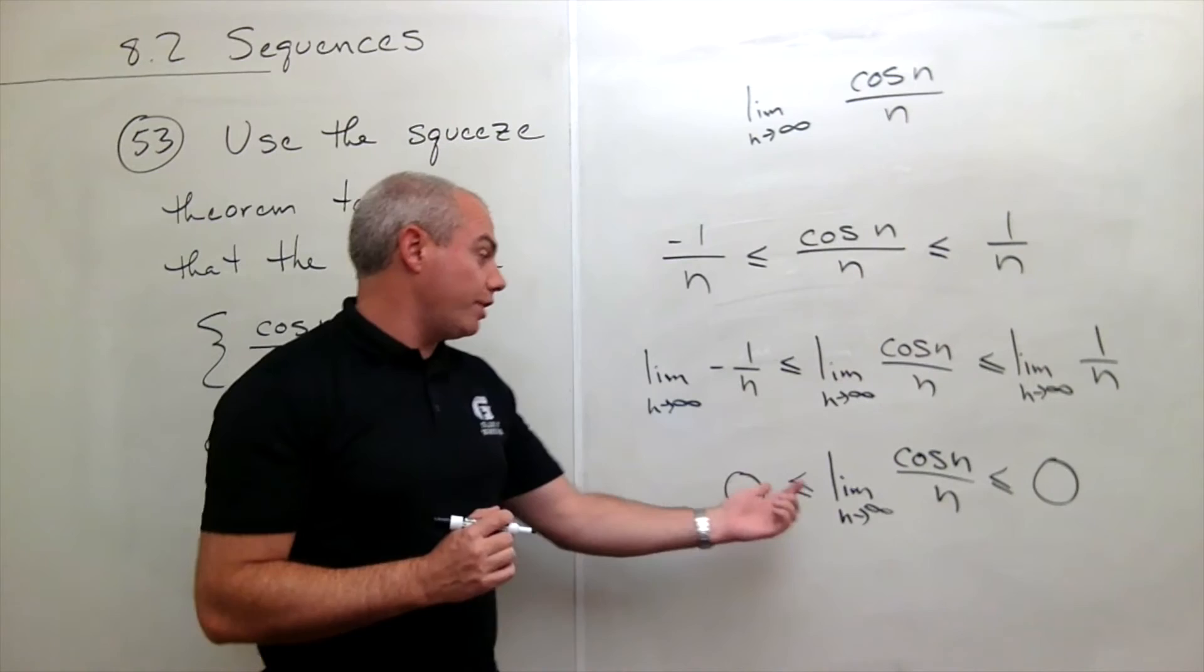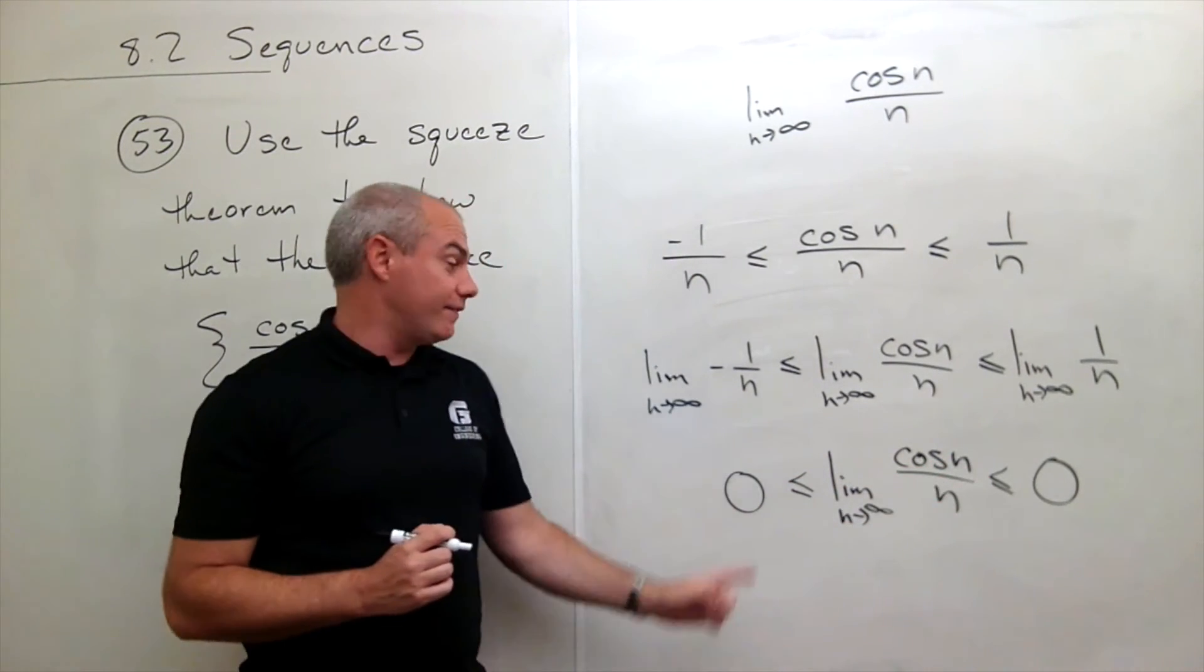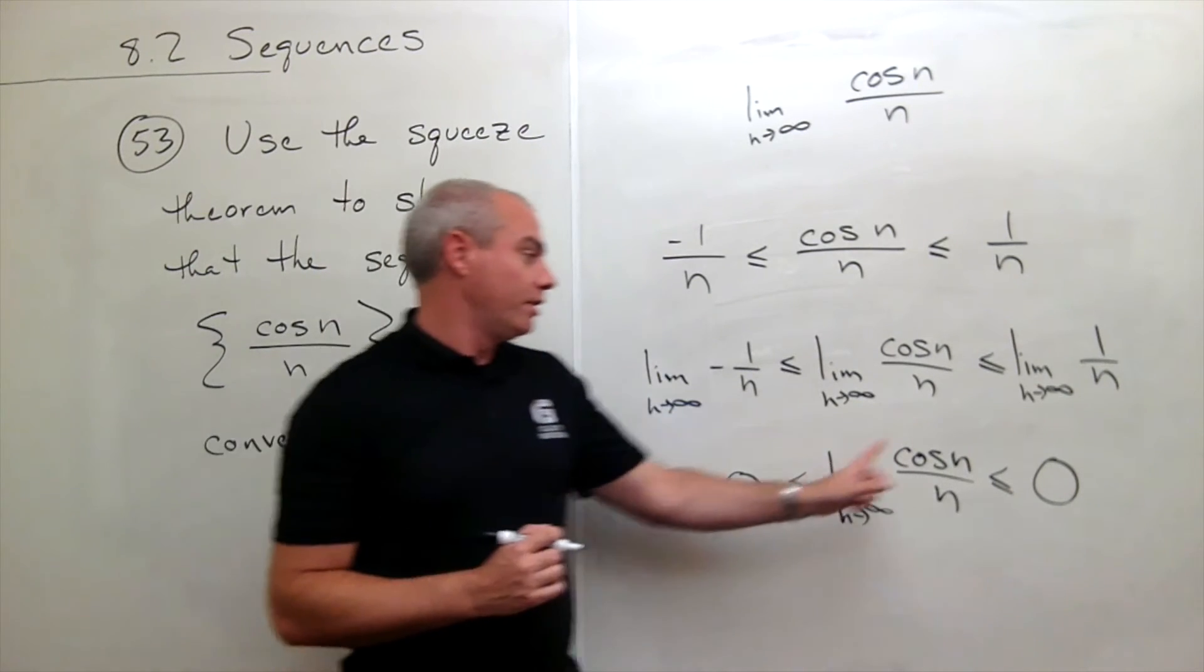So I really want to know what's the limit as n goes to infinity of cosine n over n, and I know it lives somewhere between 0 and 0.